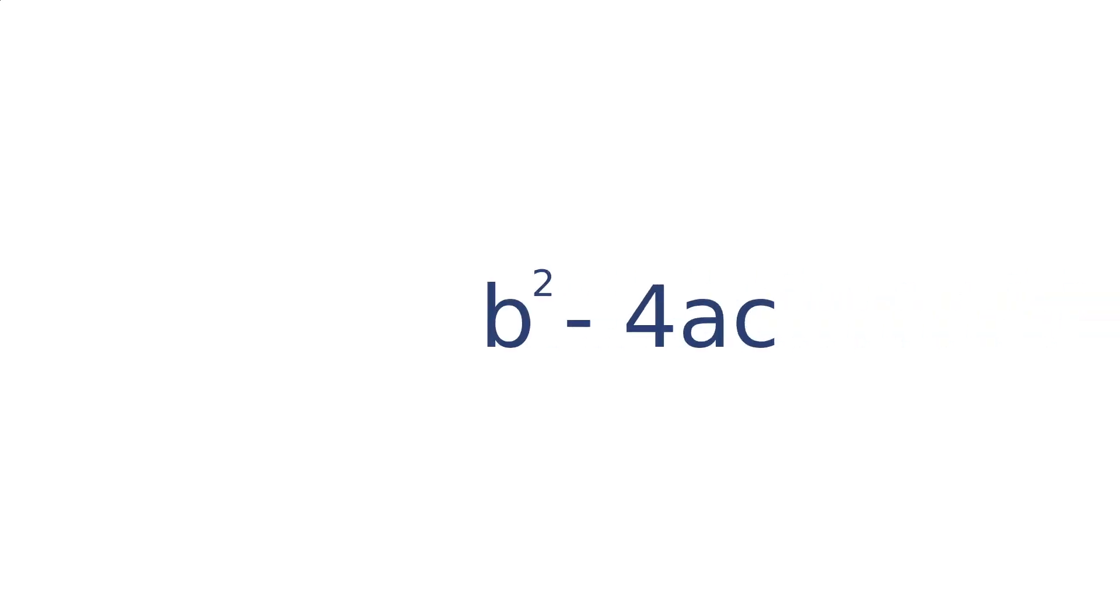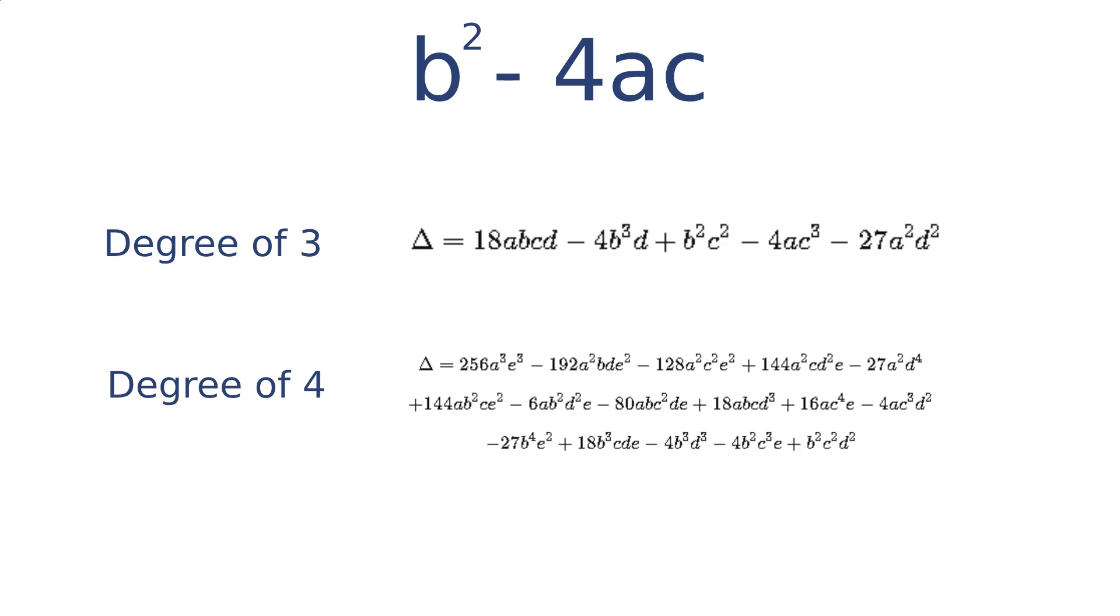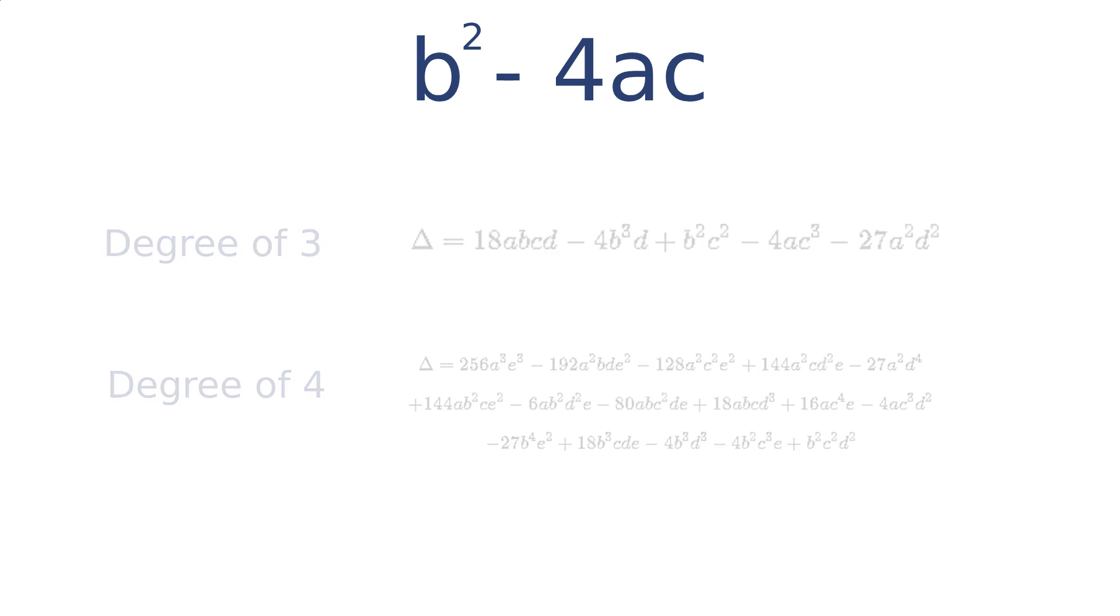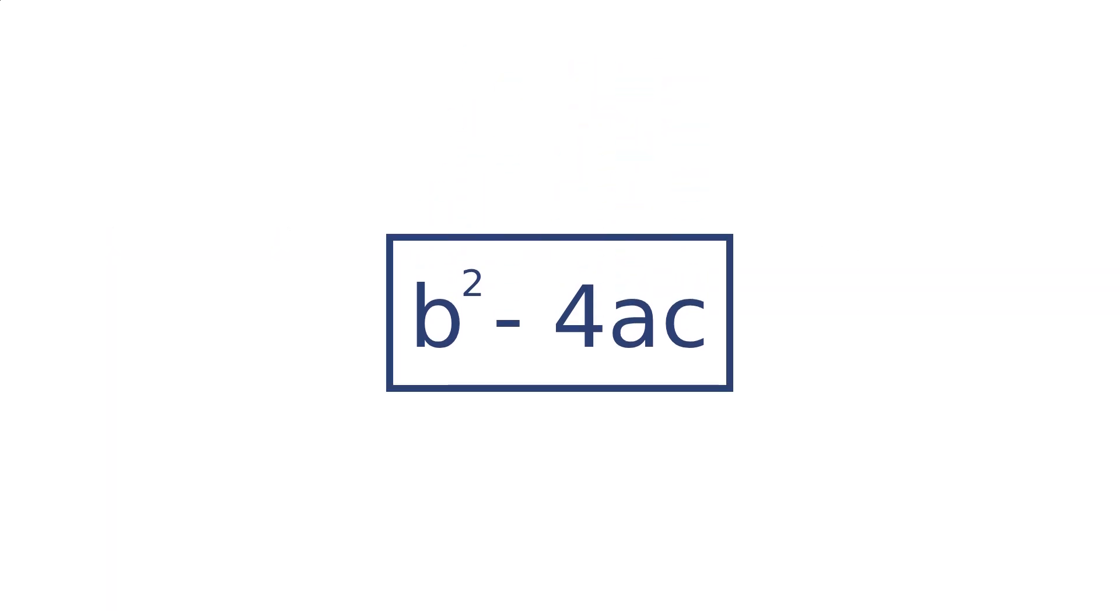This is the discriminant, b squared minus 4ac. The equation becomes far more complex with polynomials with a degree larger than 2, so for now, we will focus on using the discriminant with polynomials with a degree of 2.